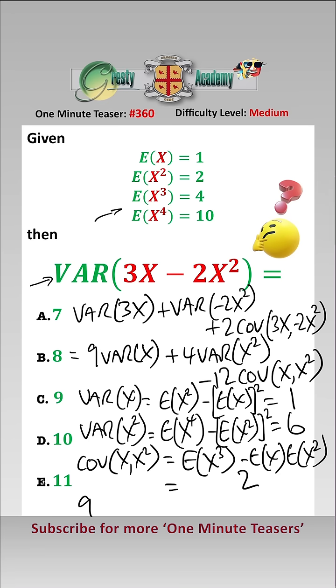Putting all of this in, we get 9 times 1 and 4 times 6 minus 12 times 2, which equals 9, which is answer C.